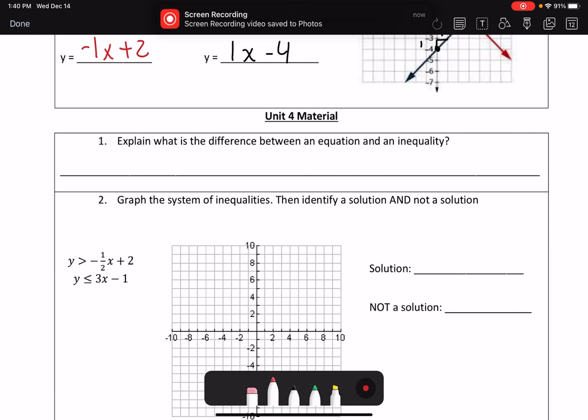Unit 4 covers solving linear inequalities and systems of linear inequalities. So first off, we need to know the difference between an equation and an inequality. The biggest difference is that an equation has one solution, while an inequality has many or infinite solutions.